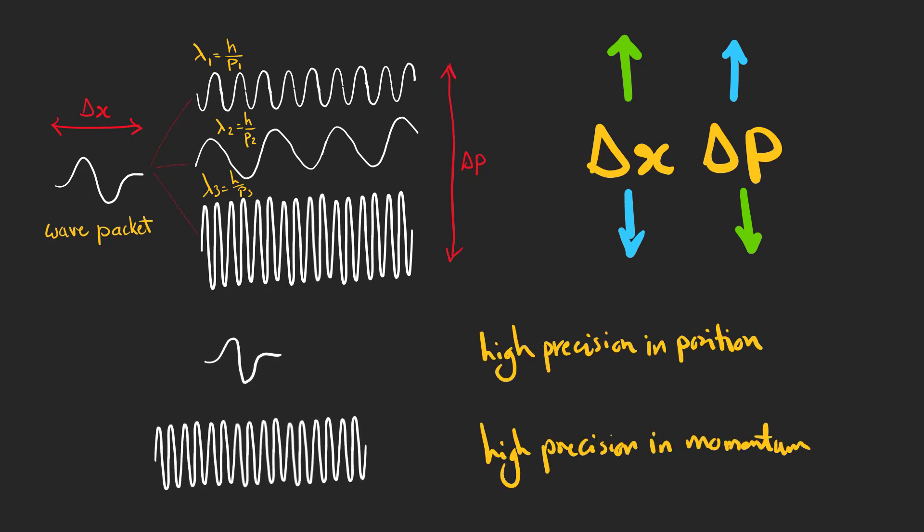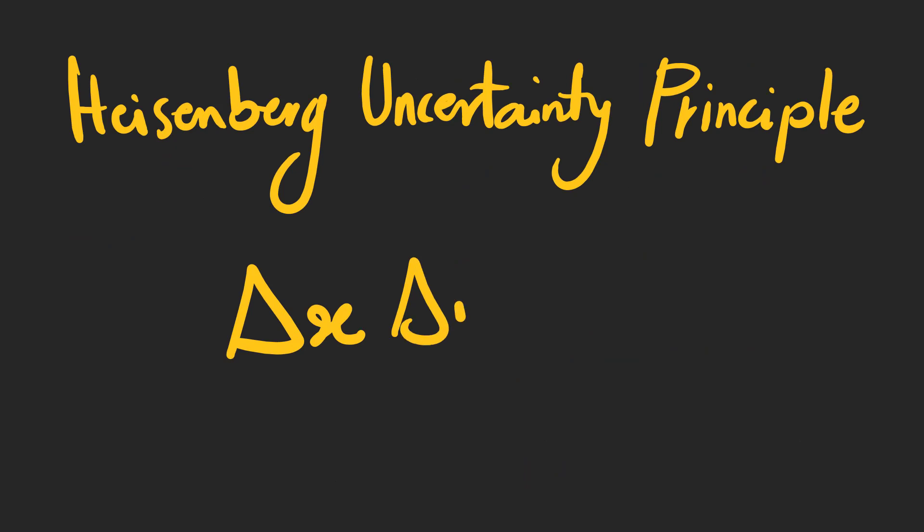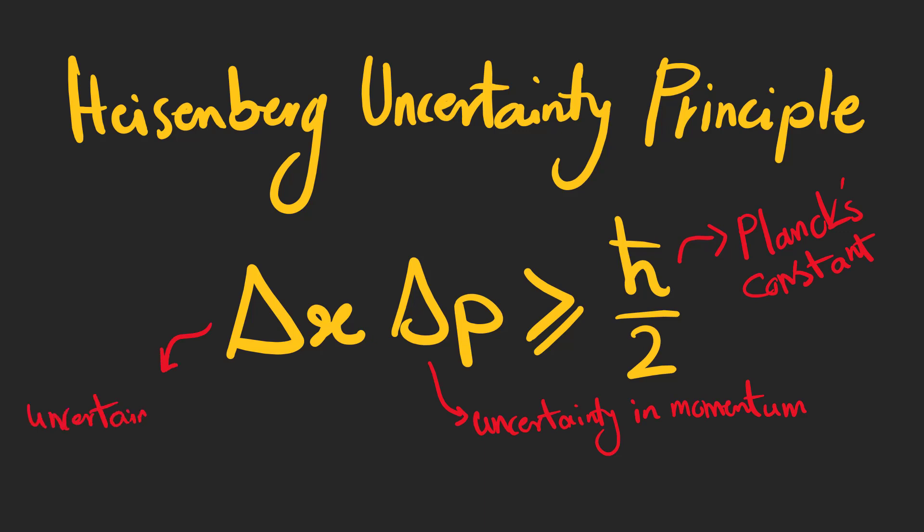Heisenberg's uncertainty principle presents the inherent uncertainty in the act of measuring a variable of a particle, which arises from the wave-particle duality.